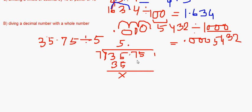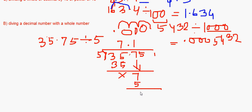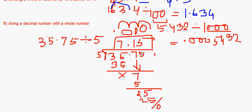So for 35.75 divided by 5: 5 goes into 35 giving 7, bring down 7 — 5 into 7 is 1 remainder 2, then 5 into 25 gives 5. The answer is 7.15.